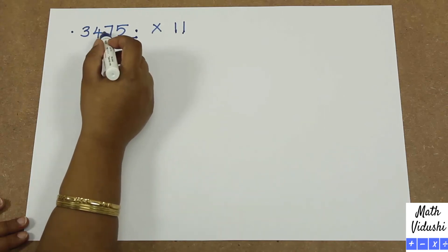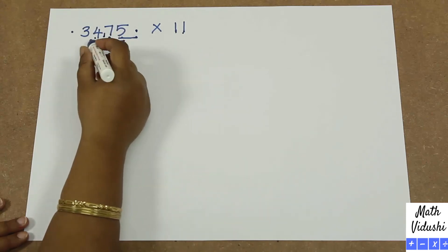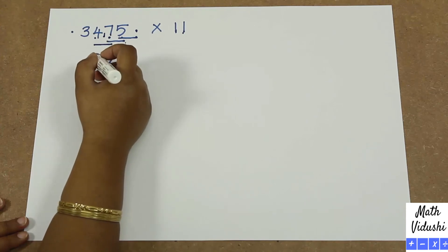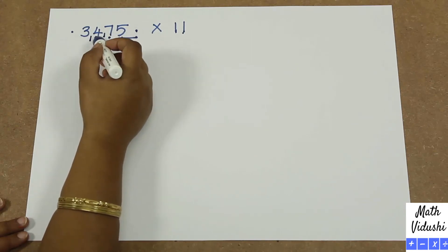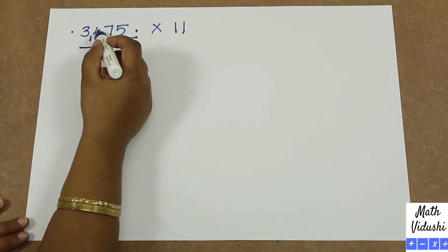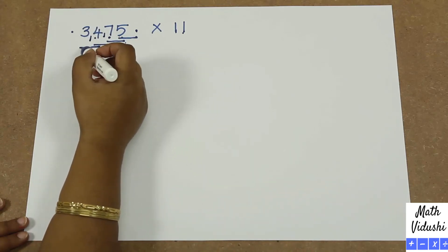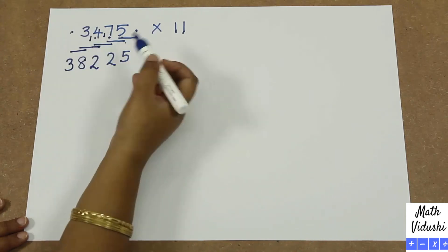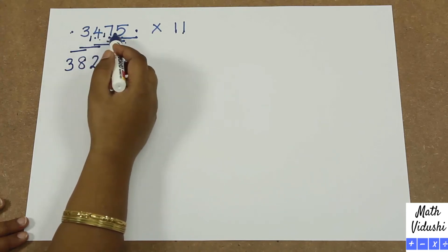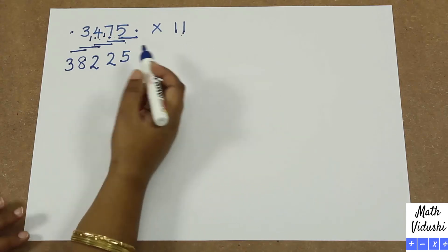So 7 plus 1 is 8, plus 4 is 12. Again it is greater than 9, so you write the units digit 2 here and put a 1 here. Now you add 4 plus 3 plus the carryover 1, which gives 8. And then you have 3 plus 0 which is 3. You have reached the last dot and this is your answer: 3475 multiplied by 11 gives you 38,225.